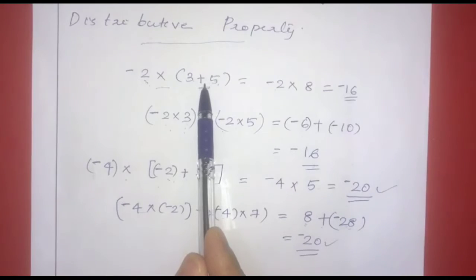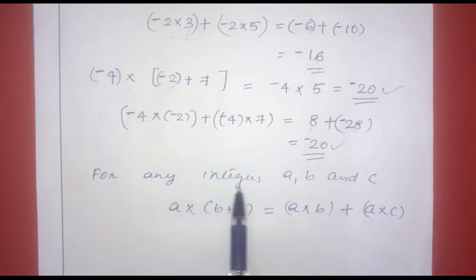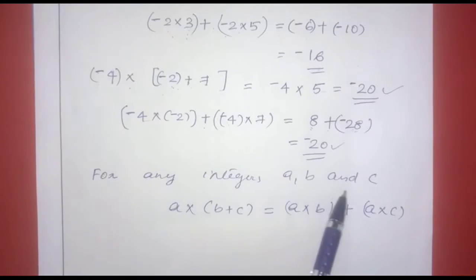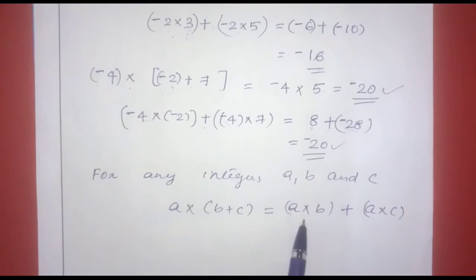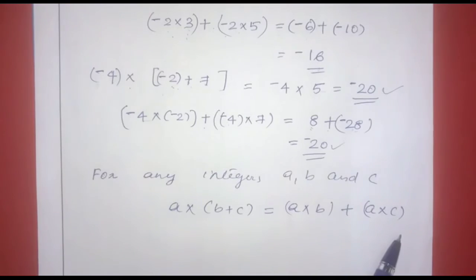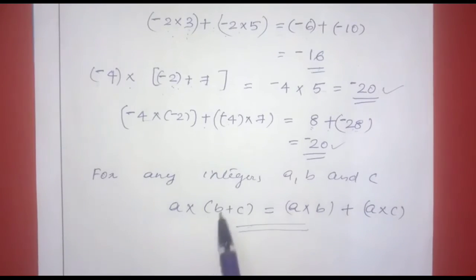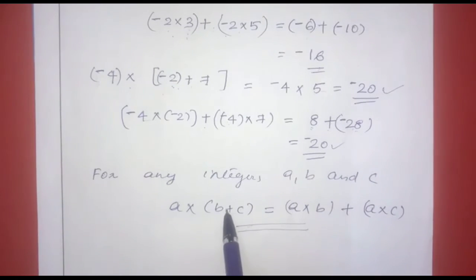This is true in all cases. In general, for any integers a, b, and c: a into (b plus c) is equal to a into b plus a into c. This is the distributive property of multiplication over addition.